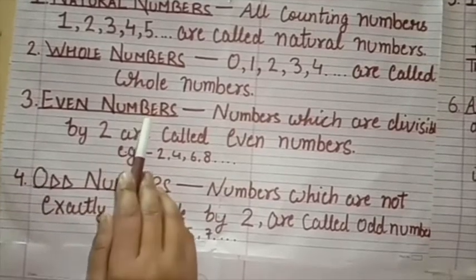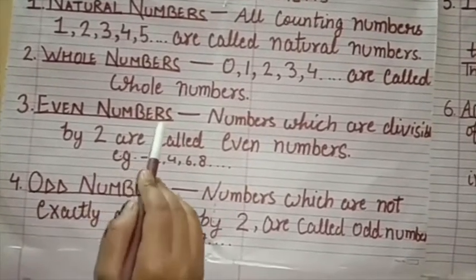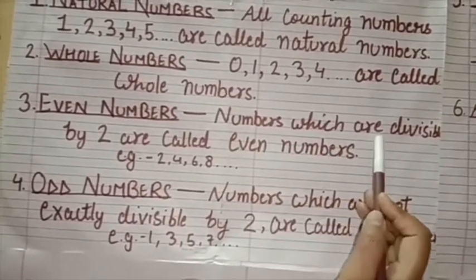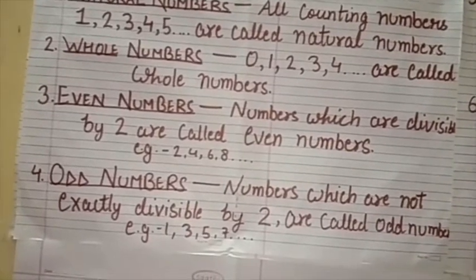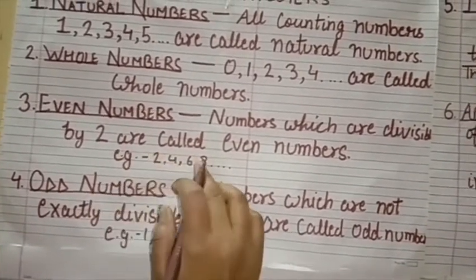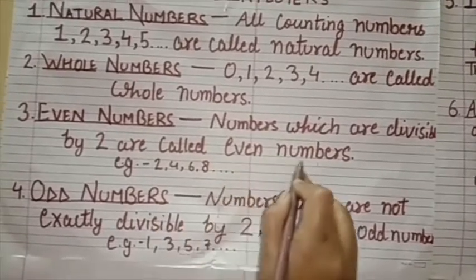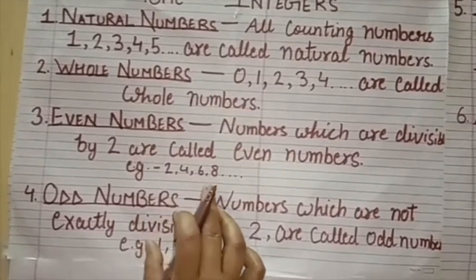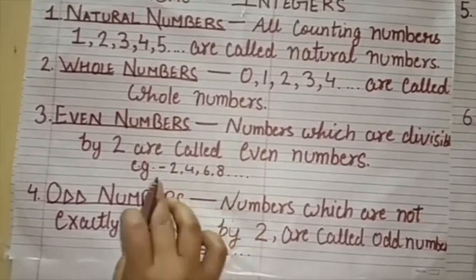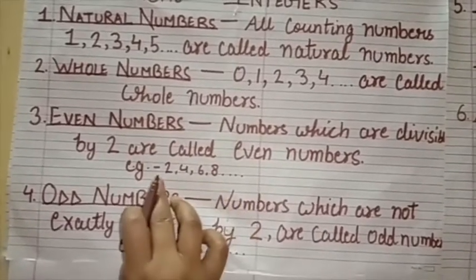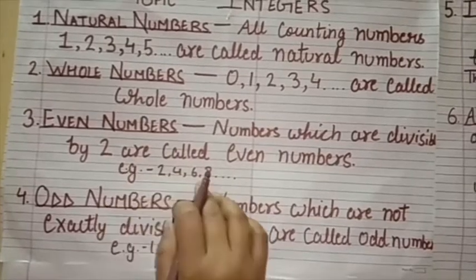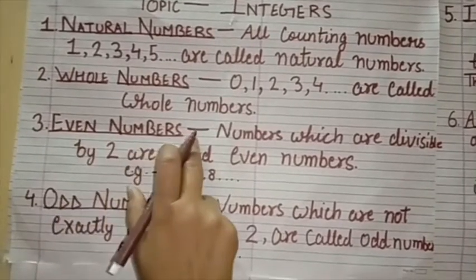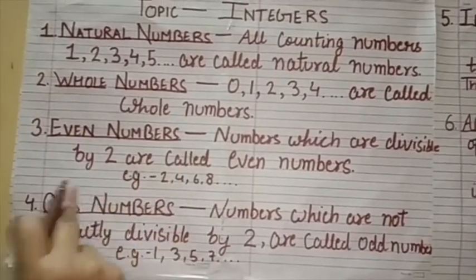Next is even numbers. Even numbers क्या होते हैं? Numbers which are divisible by 2 are called even numbers. For example, 2, 4, 6, 8 — these numbers 2 से divide हो जाते हैं। जो 2 से divided हो जाते हैं वो सारे numbers even numbers होते हैं। ये 2 की table पर आ जाते हैं, या 2 से divide हो जाते हैं।